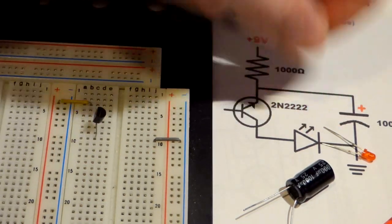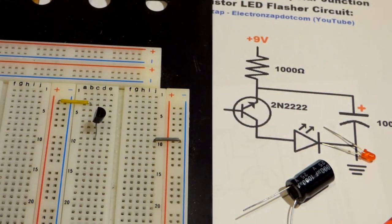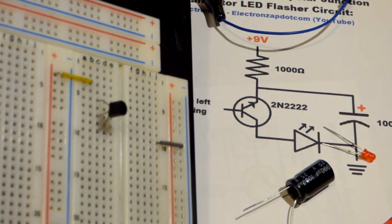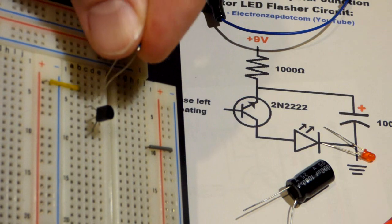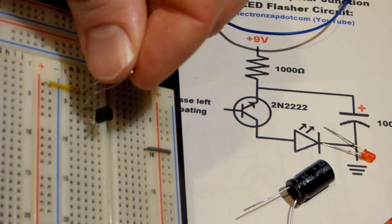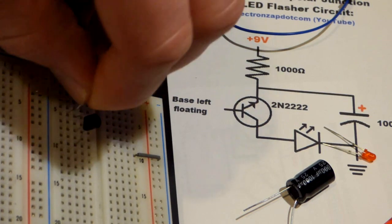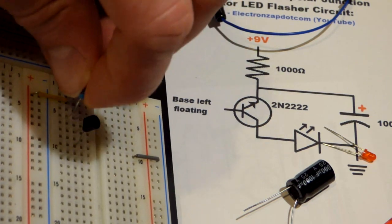Now we will take the 1 kilo-ohm resistor, and see if I can angle this where you can see it better. I will just put that from the positive jumper there that goes to the positive rail, and then the other lead down there. And there we go.